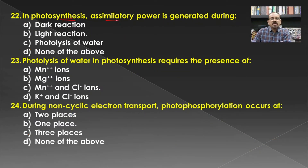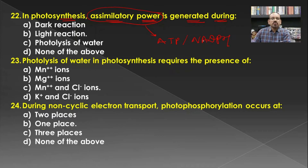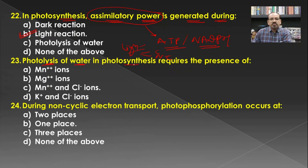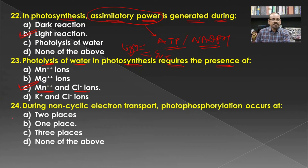In photosynthesis, the assimilatory power is generated during which stage? Assimilatory power — that is ATP and NADPH — is formed during the light reaction, specifically cyclic photophosphorylation and non-cyclic photophosphorylation. Hence B is the correct answer. For photolysis of water in photosynthesis, there is a need of manganese and chloride ions. Hence C is the correct answer for that question.